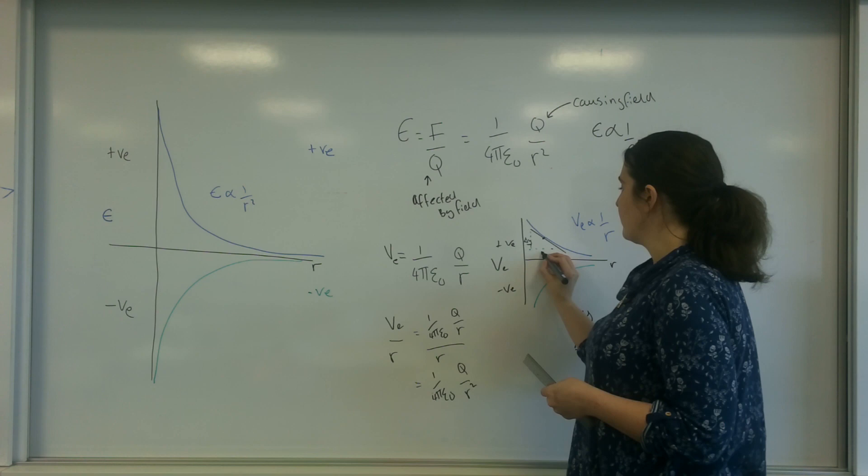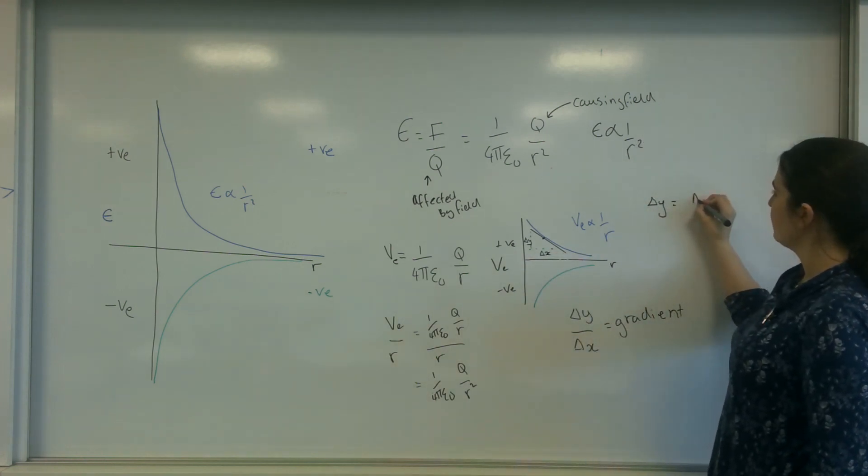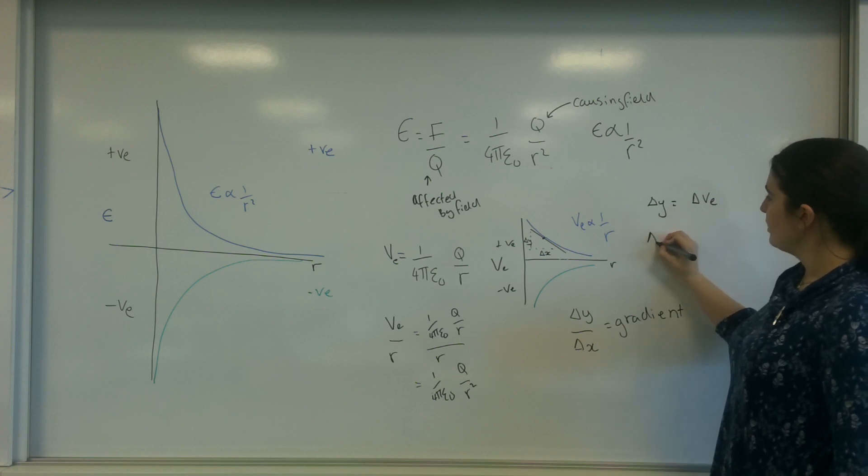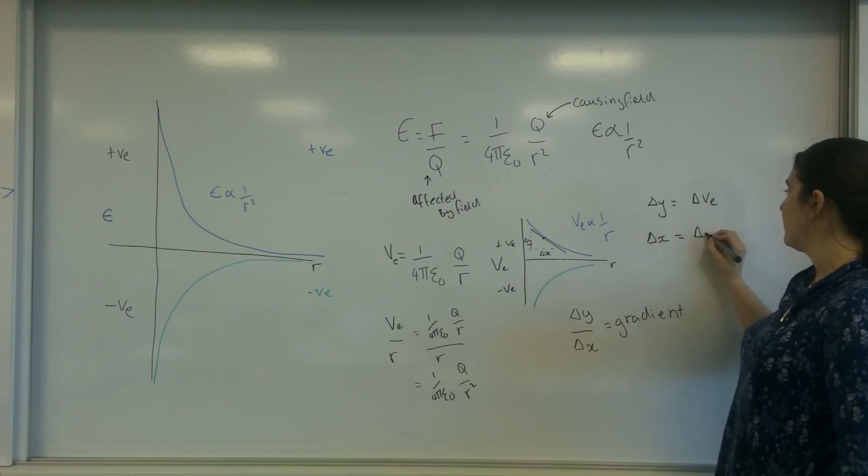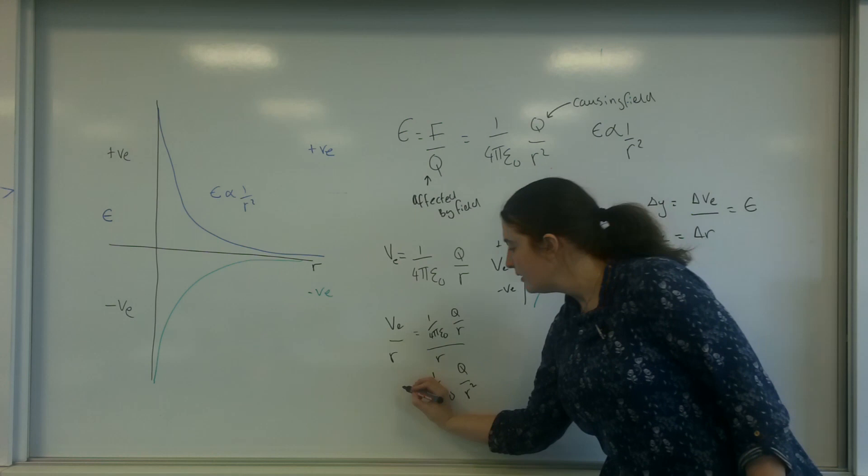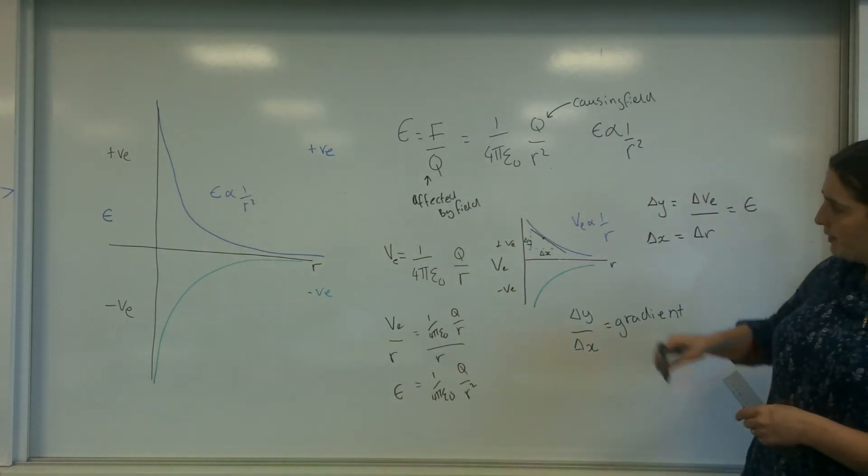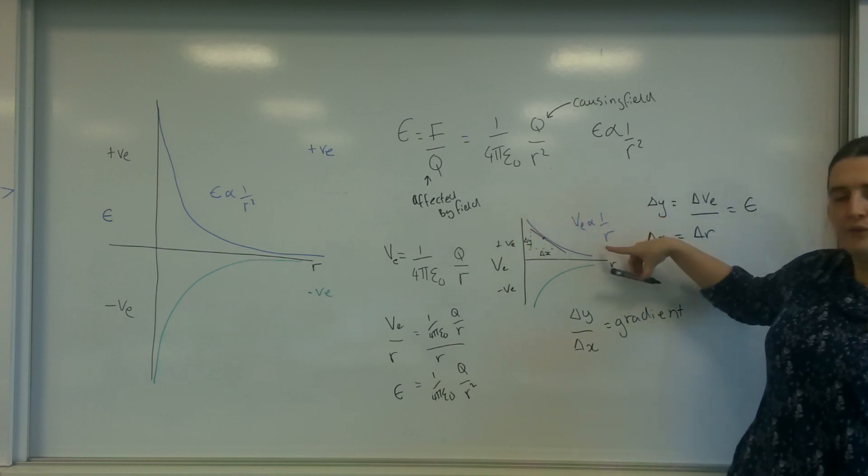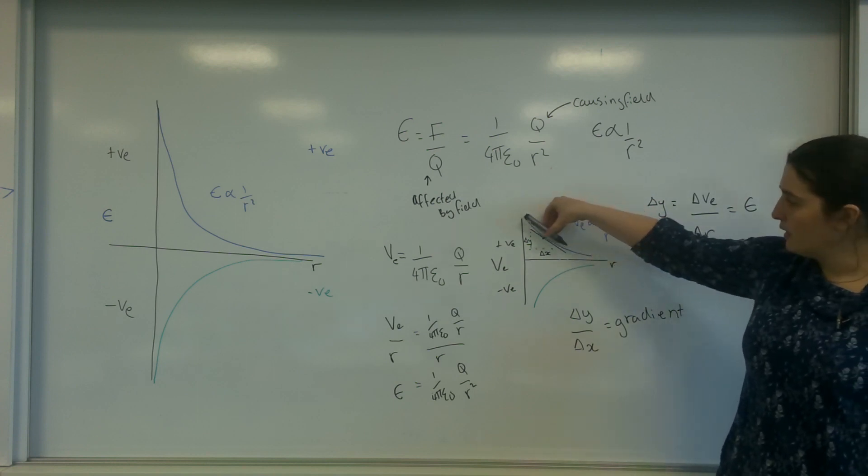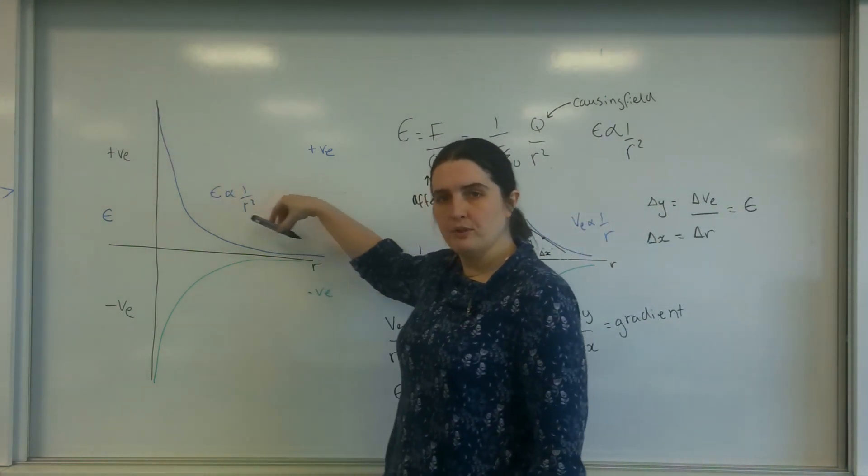Change in y over the change in x. So the change in y is the change in potential. The change in x is the change in radius. Those divided by each other equals field strength there. So as you can see here, these lines for the positive charge are always in the positive orientation, which is why the field strength is always positive.